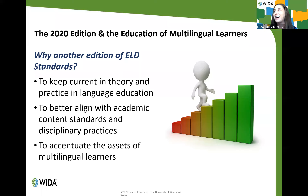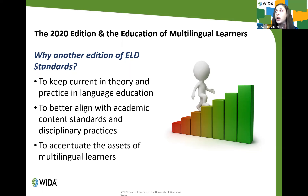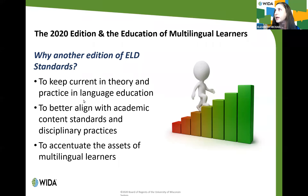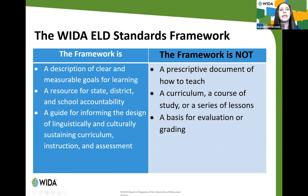Why another edition of the standards? A lot has evolved in the field of education since the 2012 Amplification — the last edition — was released. The 2020 edition was developed to keep current in theory and practice in language education, to better align with existing academic content standards and disciplinary practices, and most of all to really accentuate the assets of multilingual learners and put a 'we can do' philosophy front and center — explicitly calling out four big ideas that have always underpinned the standards.